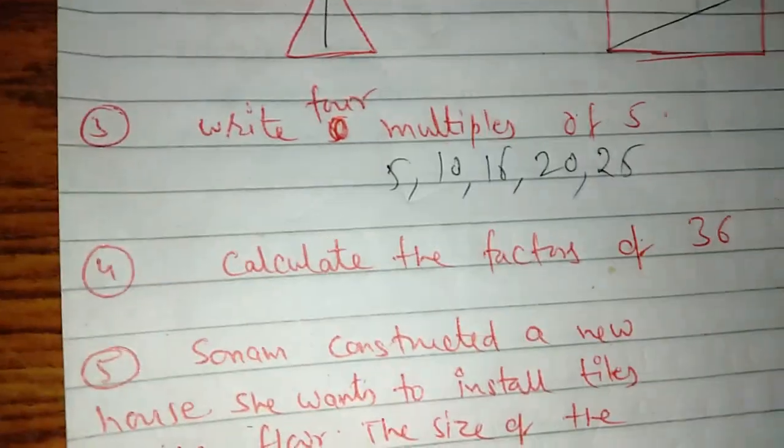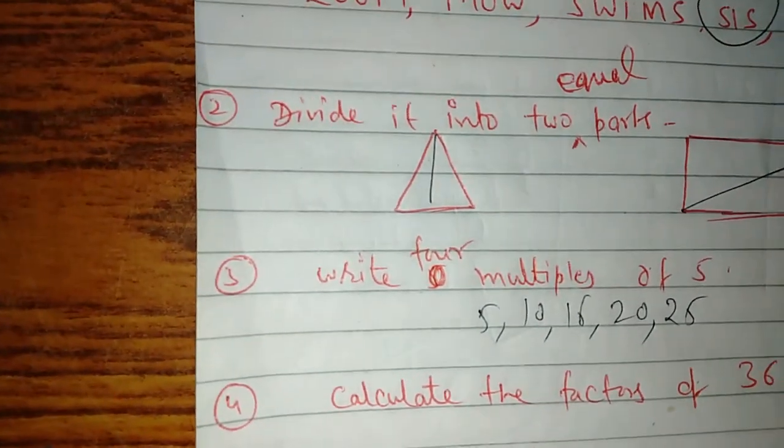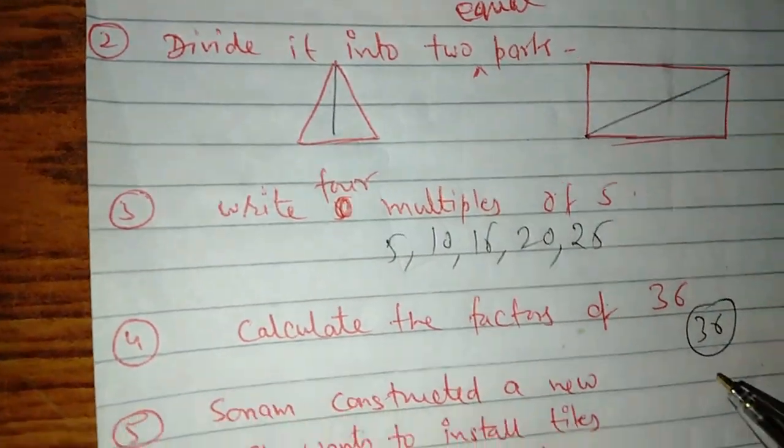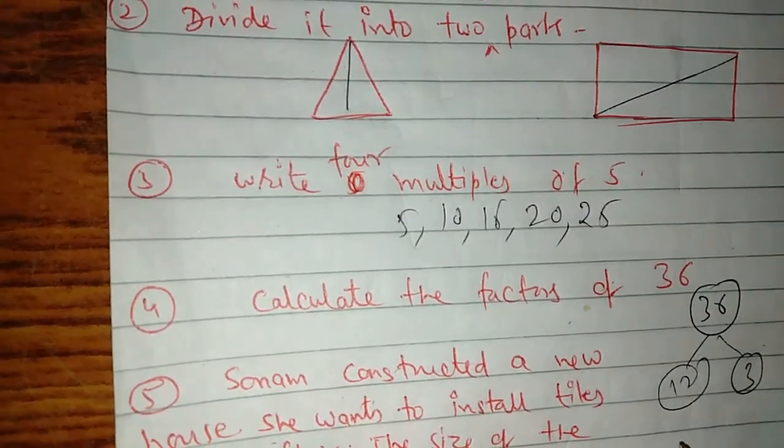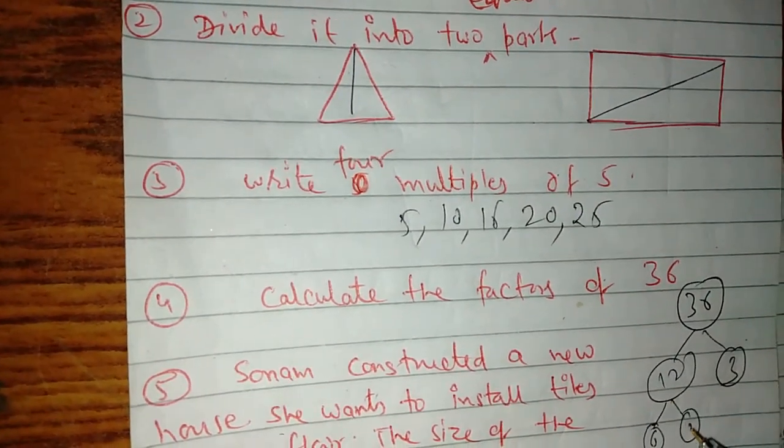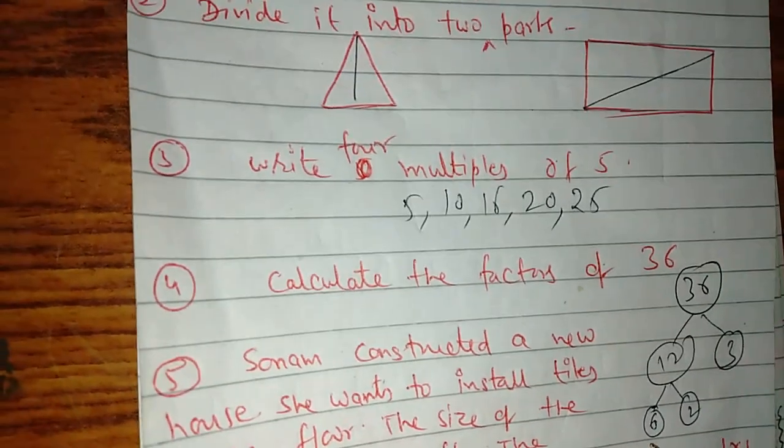Calculate the factors of thirty-six. What do you do? Three, three, six, six. Six, six, four. Three, three, four, four.